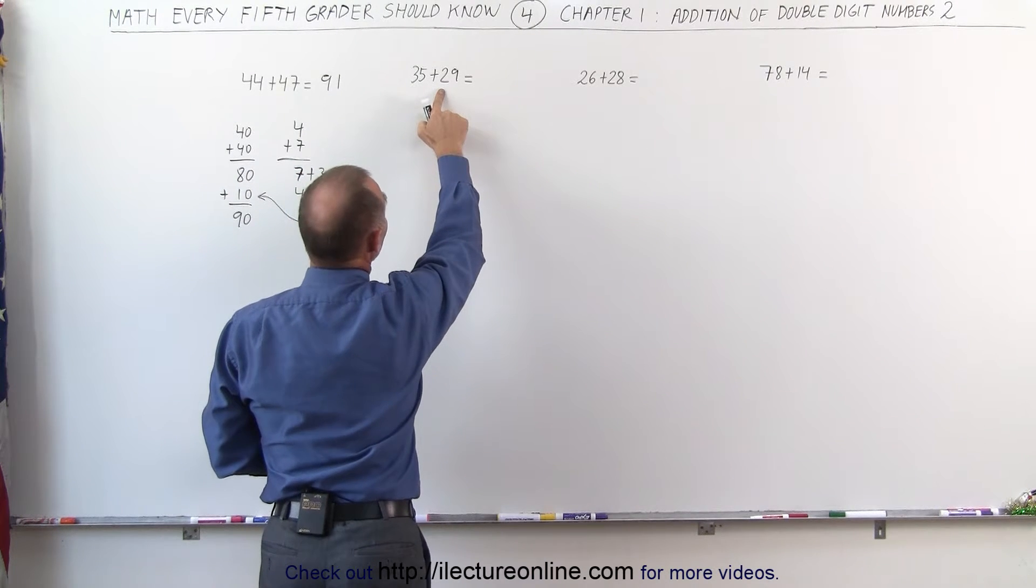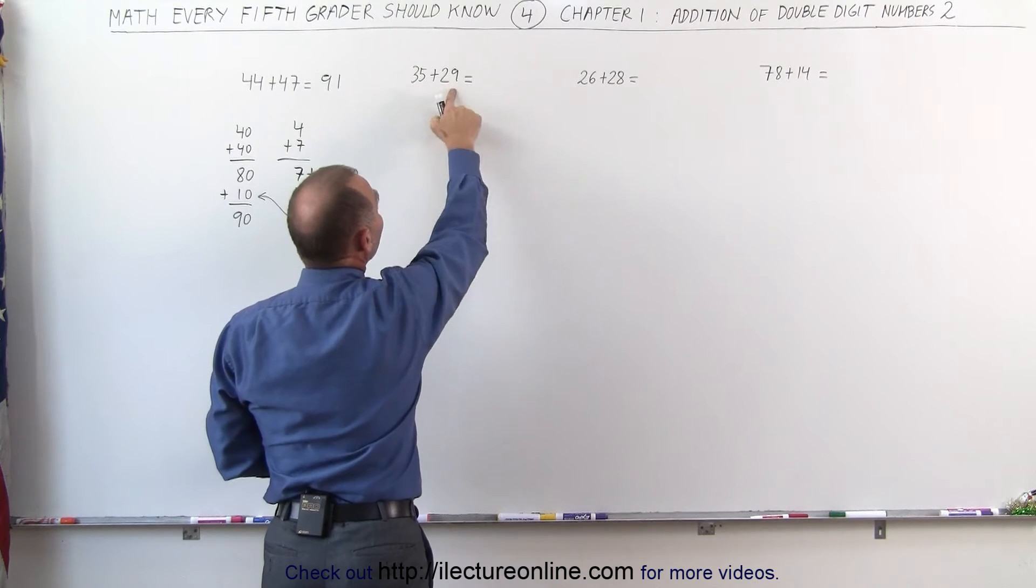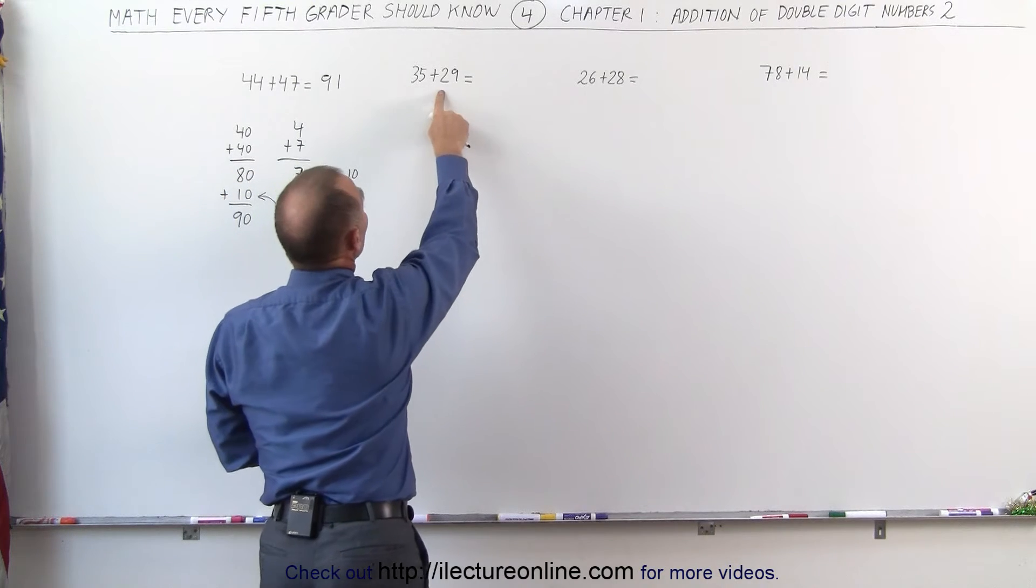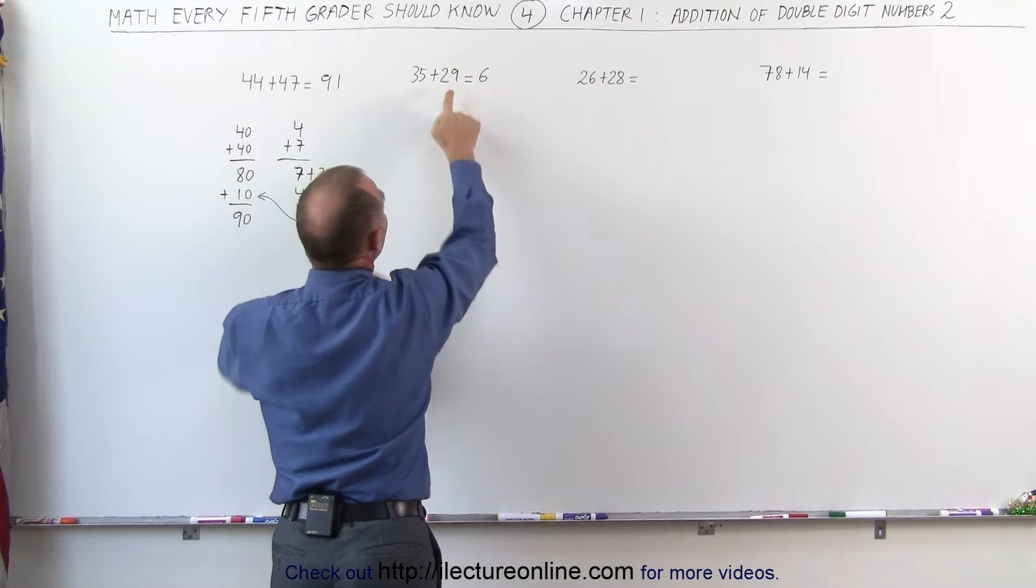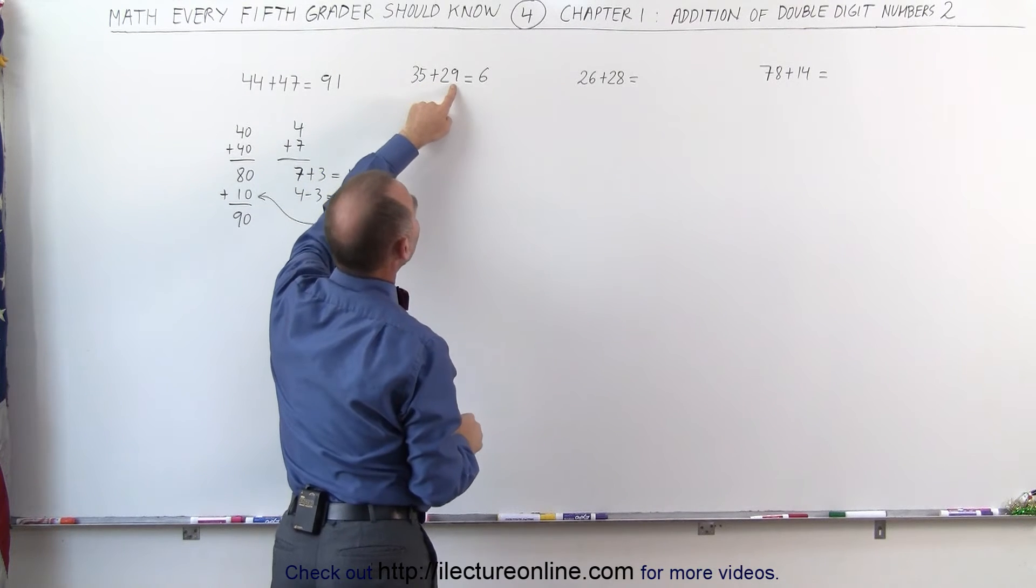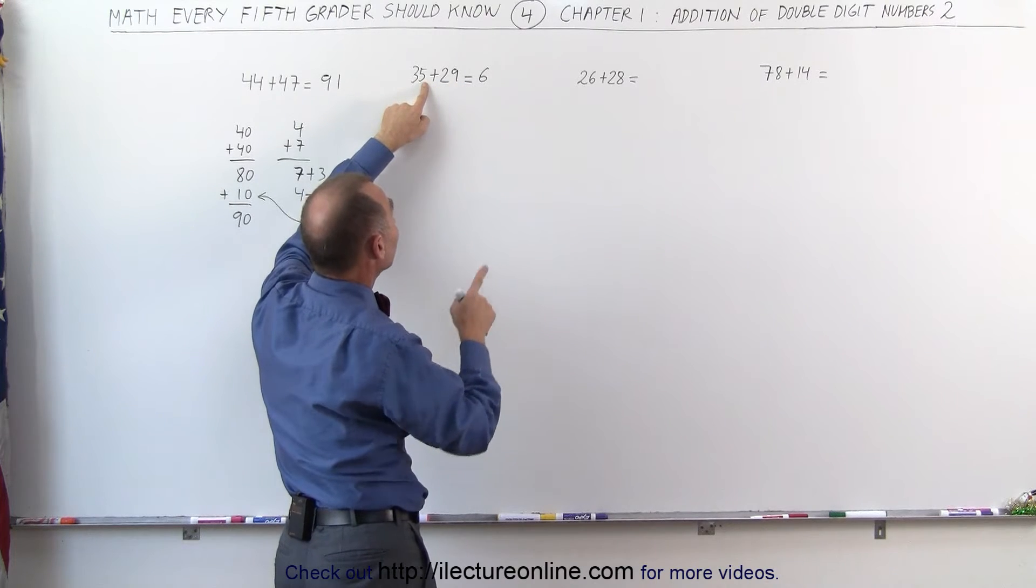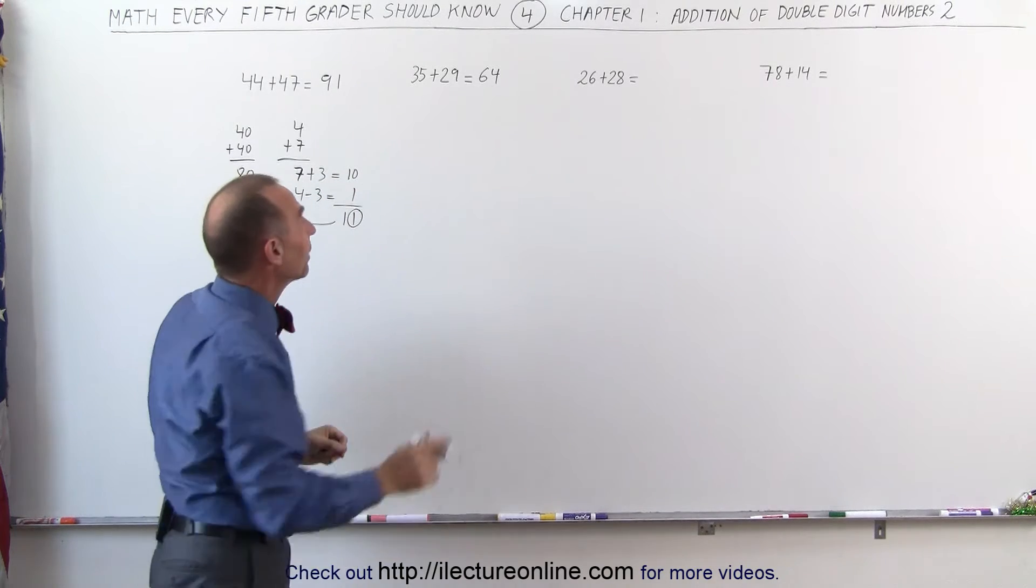Let's try it again in the next problem. 3 plus 2 is 5, so I would write 50 here. However, the 5 plus 9 is bigger than 10, so I have to add another 10 to that. So 3 plus 2 is 5, plus 1 gives me 6. Now look at the last two numbers, 5 plus 9. I take 1 away from the 5 to make that a 10, which gave that to be 60. I subtract 1 from the 5, that gives me 4, so I put 64 down. How did we do that?